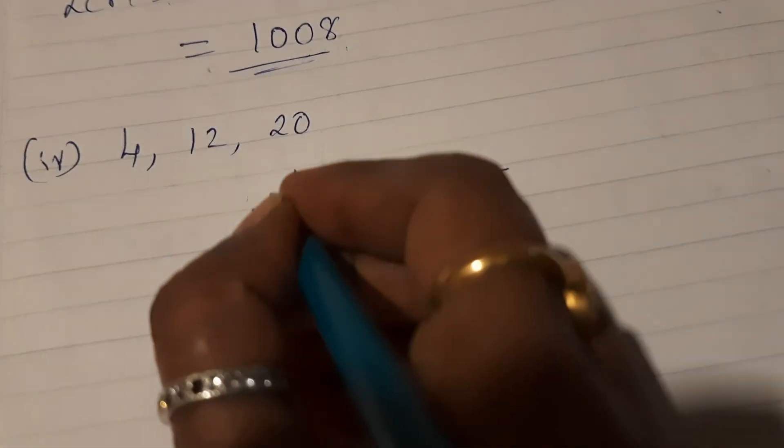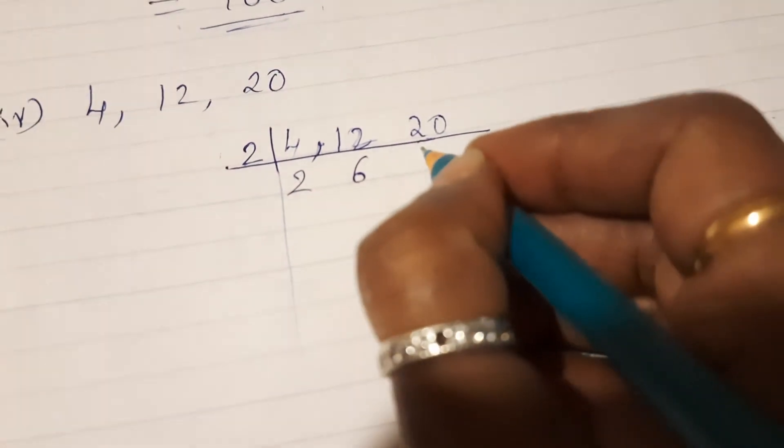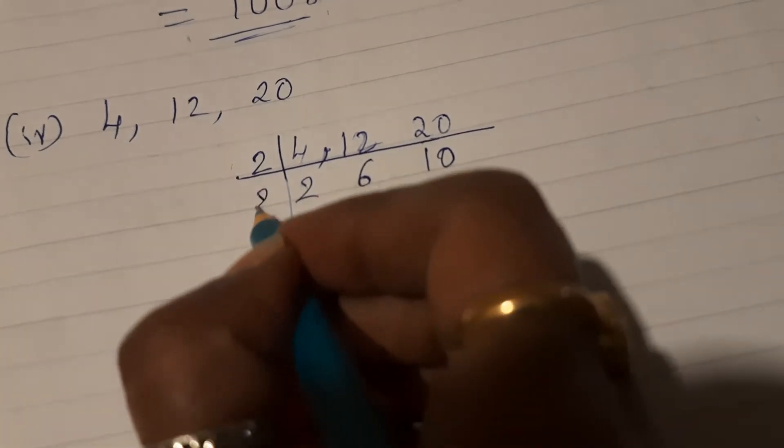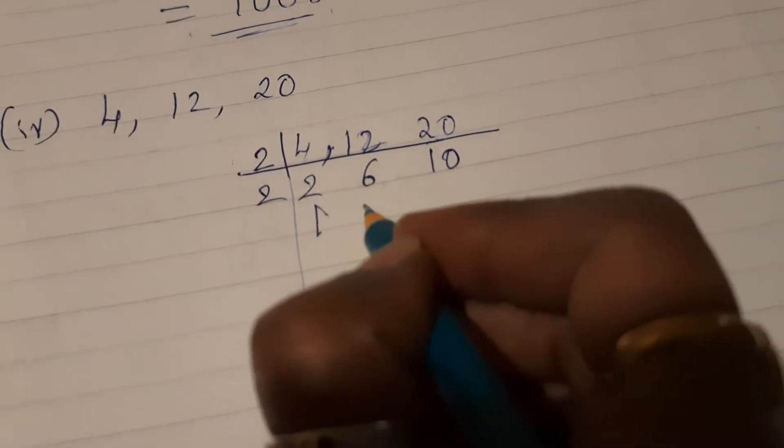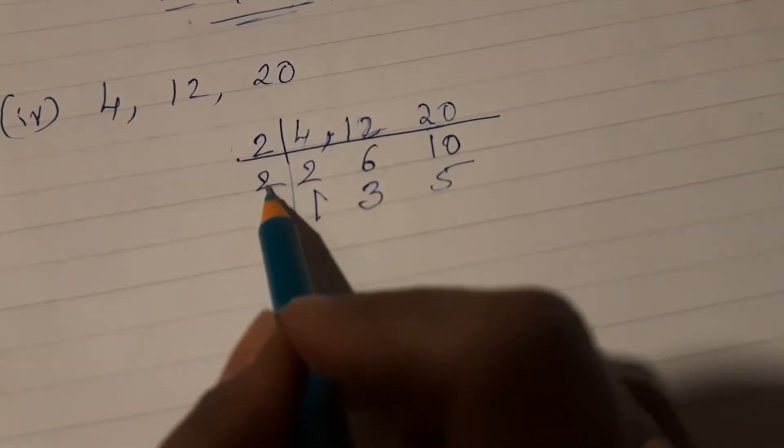Easily divisible by 2. 2 twos are 4, 2 sixes are 12, 2 tens are 20. Again it will go by 2. 2 ones are 2, 2 threes are 6, 2 fives are 10. Now you know these 2 and 2.